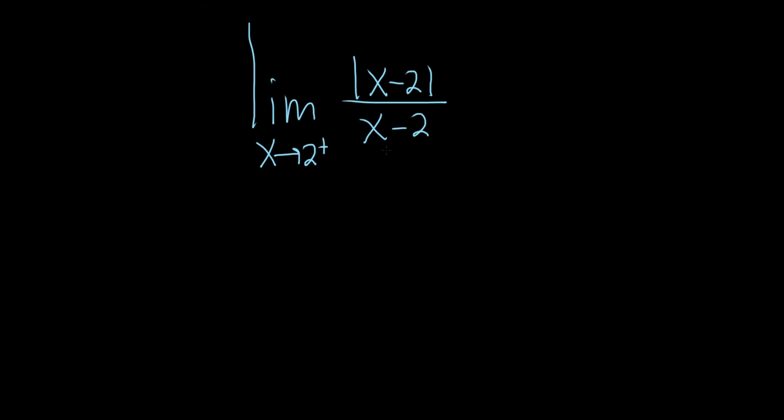So the idea is to eliminate the absolute value. Recall that the absolute value of x is a piecewise function. This is super useful. It's x if x is greater than or equal to 0, and it's minus x if x is less than 0.